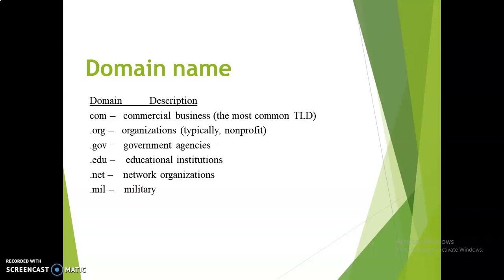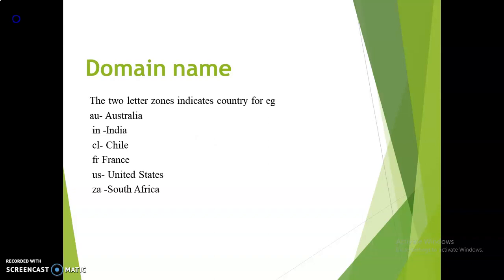Some extensions are used for educational institutions, some for network organizations, and some for military purposes — each identified by the domain name extension. The last part, such as .com or .org, is called the top-level domain, or zone.